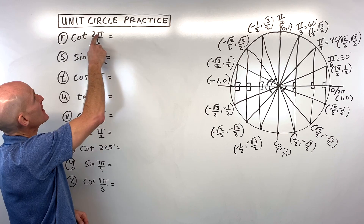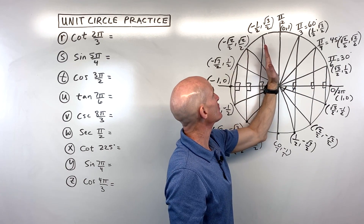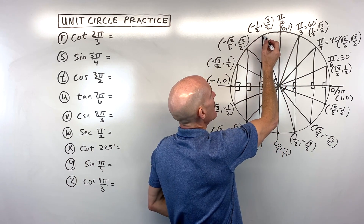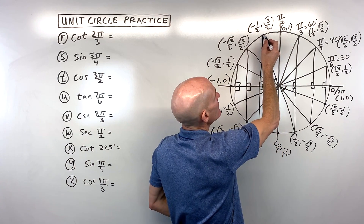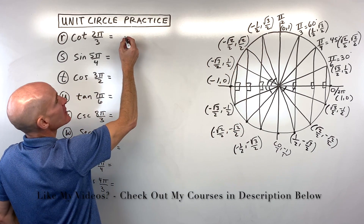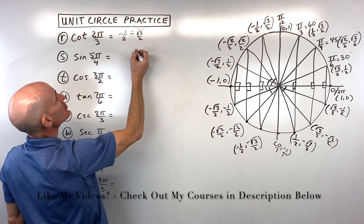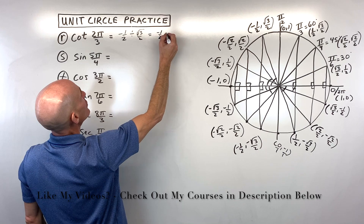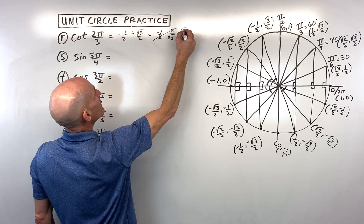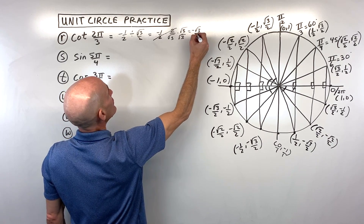Letter R: cotangent of 2π/3. Think of this as 2/3 of π; another 1/3 takes us to the x-axis, so the reference angle is 1/3 π. Coordinates are negative 1/2, √3/2. Cotangent is x over y: negative 1/2 divided by √3/2. Dividing is multiplying by the reciprocal; the 2s cancel. Rationalize by multiplying by √3/√3 to get negative √3/3.